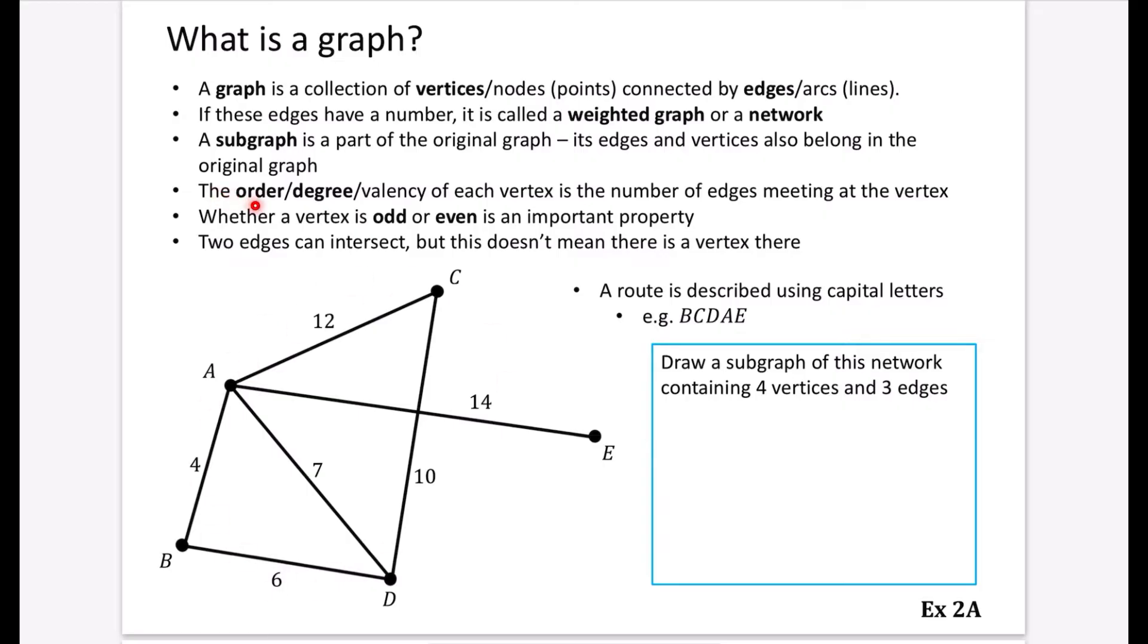And then I've got that the order or the degree, I've not put in bold this word valency because it doesn't get used quite as much, but the order or the degree of each vertex is the number of edges meeting at the vertex. So for example, if we have a look at A, and I'm going to do this just in a red color, we can see that there is one, two, three, four edges meeting at that point. So I could put a four with a circle around it to show that it's got a degree of four.